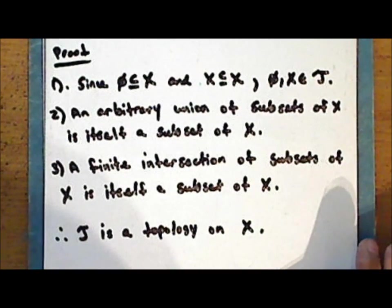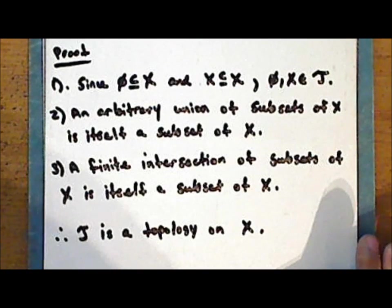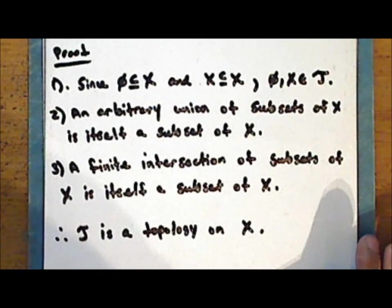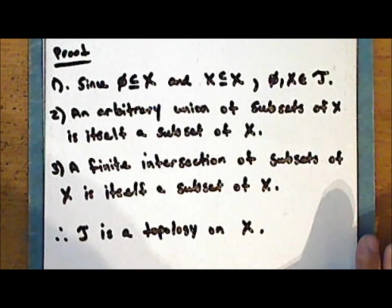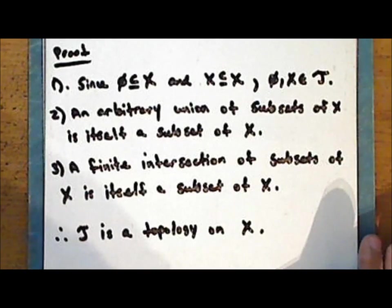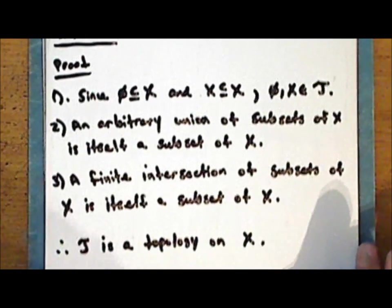The discrete topology is the largest topology possible on a given set X — that is, it is the most inclusive collection of subsets of the set X that is a topology on the set X.